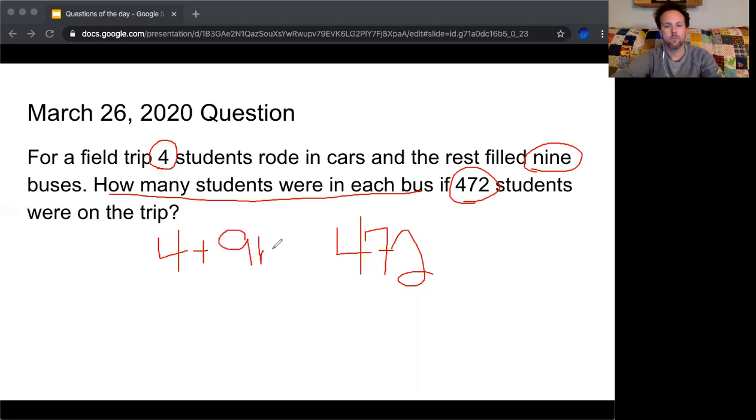So I'm going to use B as my variable for four students plus nine full buses equals 472. So we're looking really for how many were in each bus. So we're trying to solve this equation for B.